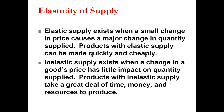A good with very elastic supply is going to have a very horizontal supply curve, while a good with inelastic supply is going to have a very vertical supply curve. The reason is that with elastic supply, a small change in price greatly changes quantity supplied, so the curve is horizontal. With inelastic supply, a small change in price doesn't change quantity supplied much at all, so the curve is very vertical.